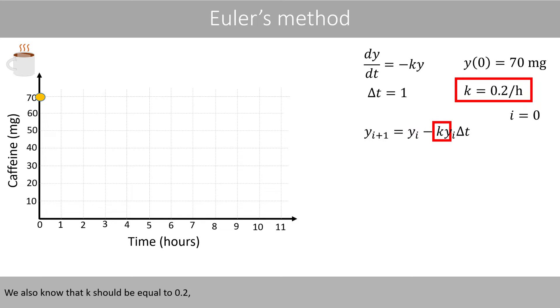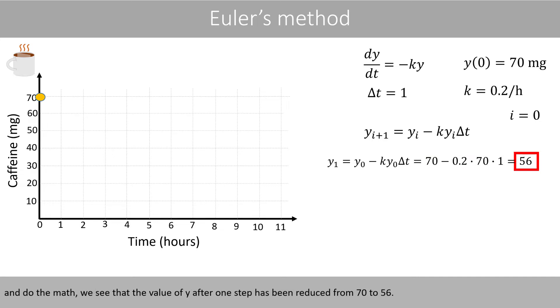We also know that k should be equal to 0.2, and that Δt should be equal to 1. If we plug in the numbers in the equation and do the math, we see that the value of y after one time step has been reduced from 70 to 56.